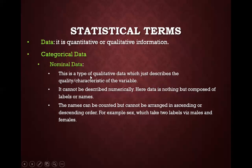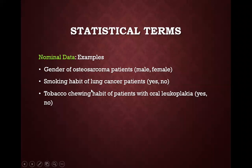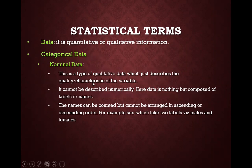Nominal data is a type of qualitative data that describes the quality or characteristic of the variable. It cannot be described numerically, the data is composed of labels or names, and they cannot be arranged in ascending or descending order. Examples include gender of osteosarcoma patients — male or female — smoking habit of lung cancer patients — yes or no — and tobacco chewing habit of patients with oral leukoplakia — yes or no. This is qualitative categorical data, specifically nominal data because these are names.